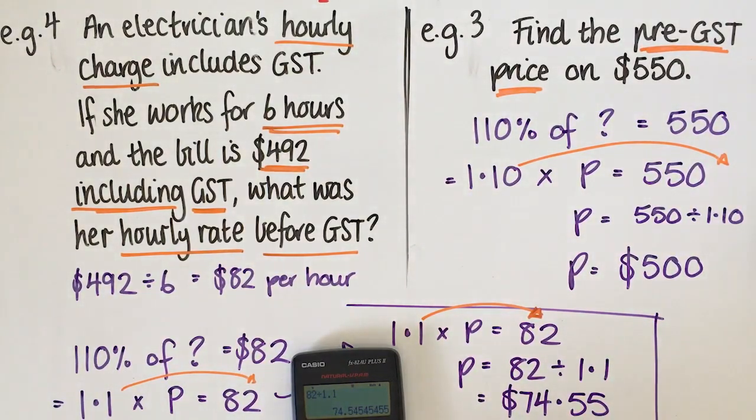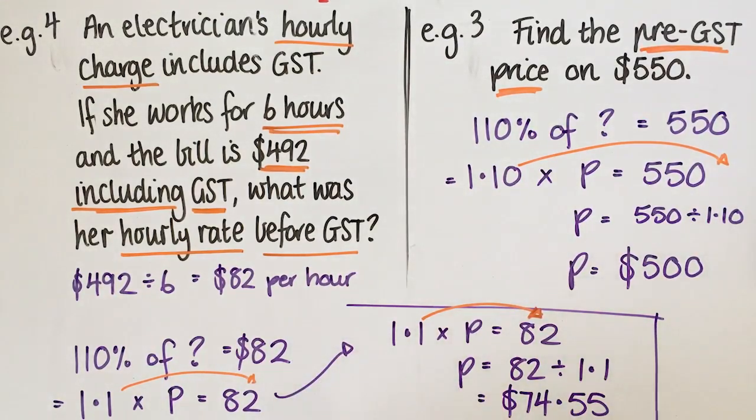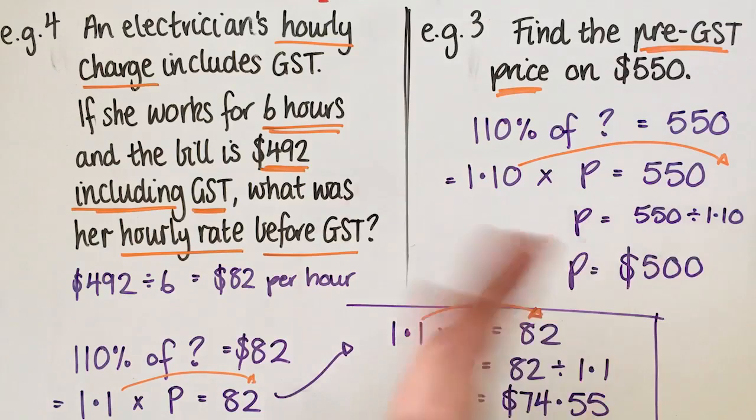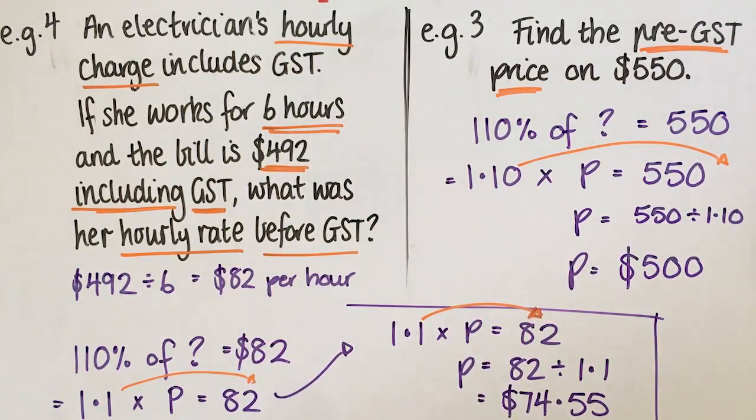Okay, so this electrician every hour she's actually taking home $74.55 and the rest of that money is going towards tax. Okay, so if we think back to our learning intention and success criteria, it was to be able to add tax onto items and to figure out what something cost before the tax was added. So if you can do both of those things, you've met today's success criteria.